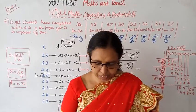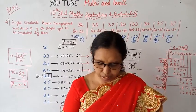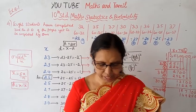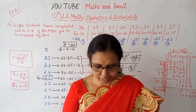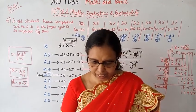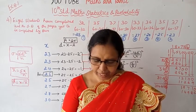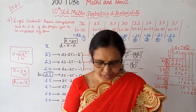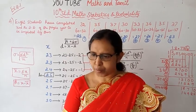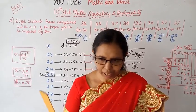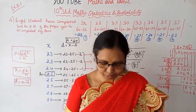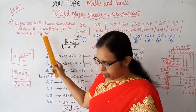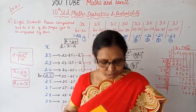A teacher asked the students to complete 60 pages of a record notebook. Eight students have completed only 32, 35, 37, 30, 33, 36, 35, and 37 pages. Find the standard deviation of the pages yet to be completed by them.